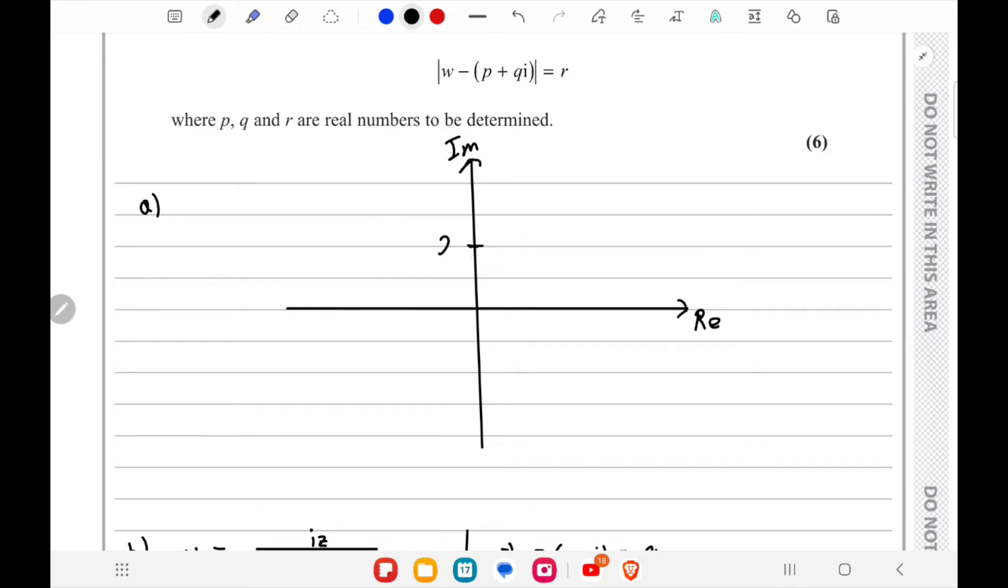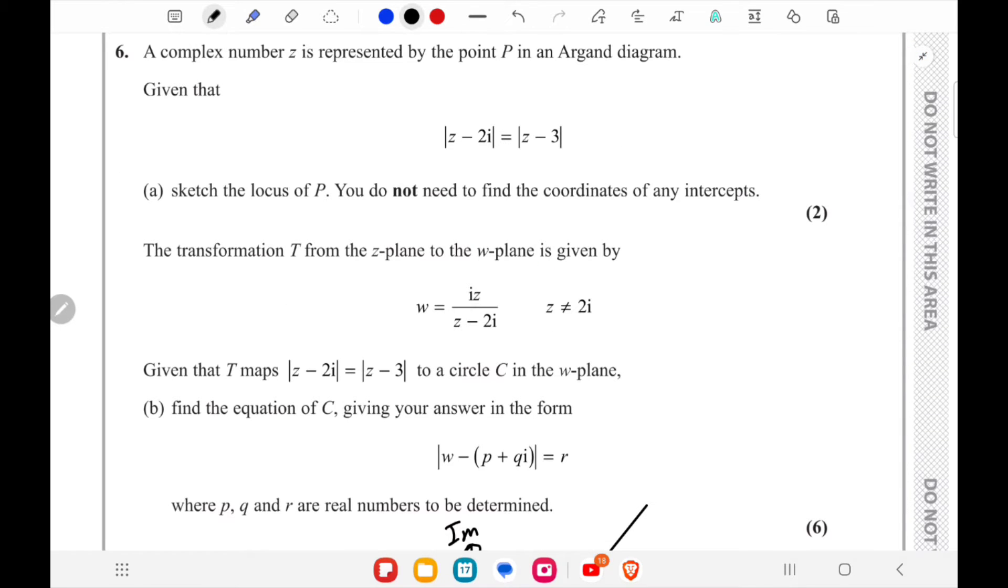We'll label this as (0,2) and this as 3, and we can just draw our line to join them to help us sketch. We'll take that point as 3 and draw a perpendicular bisector to this, and that's enough.